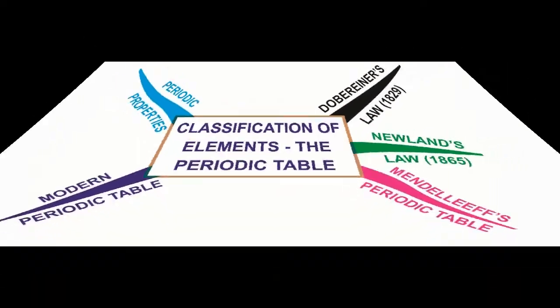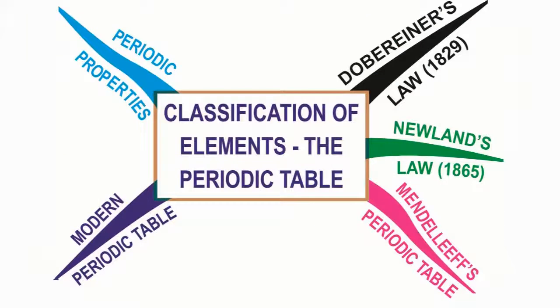The branches in this chapter are Dobereiner's law, Newland's law, Mendeleev's periodic table, modern periodic table, and periodic properties.